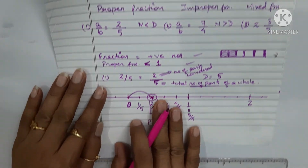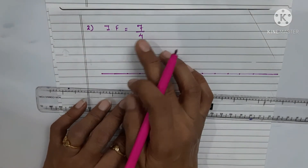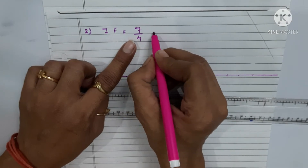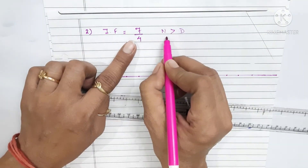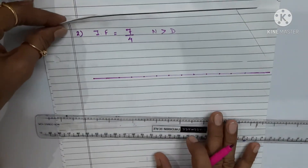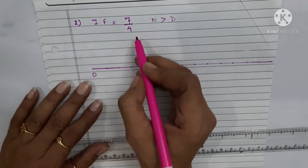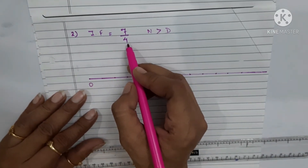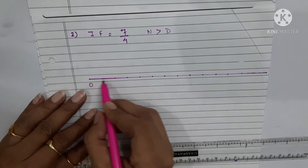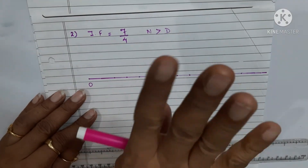Now let us look at the improper fraction example: 7/4. It is in a/b form and the numerator 7 is greater than the denominator 4. Let us find how to present this on the number line. We draw a number line starting from zero and look at the denominator, which is 4.